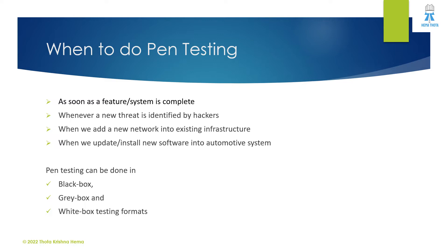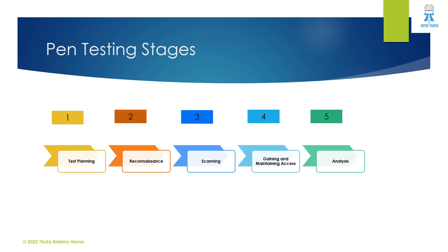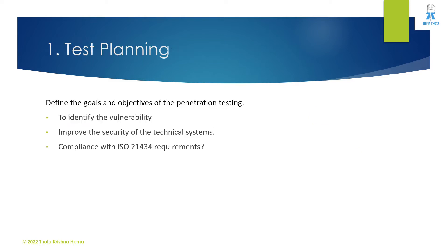Pen testing can be done in white box testing, gray box testing, and black box testing formats. In pen testing there are five stages: stage one is test planning, phase two is reconnaissance, three is scanning, four is gaining and maintaining access, and five is analysis.